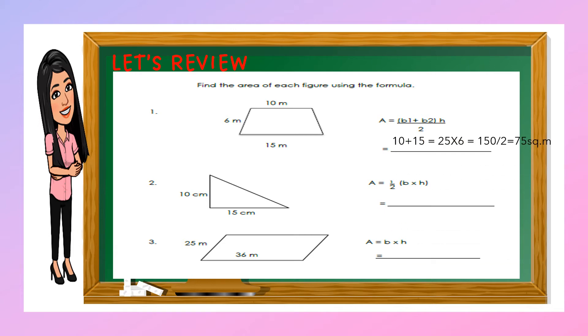The other one is 15 meters and 6 meters. The formula is b1 plus b2 times height divided by 2. So here is the solution. We have 10 plus 15 equals 25 times 6 because 6 is the height equals 150 divided by 2. So the answer is 75 square meters.